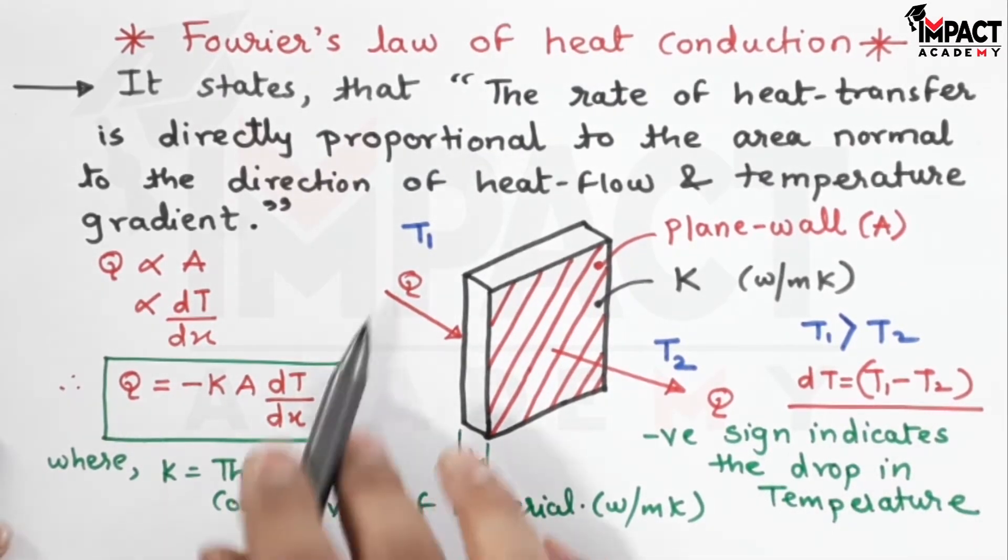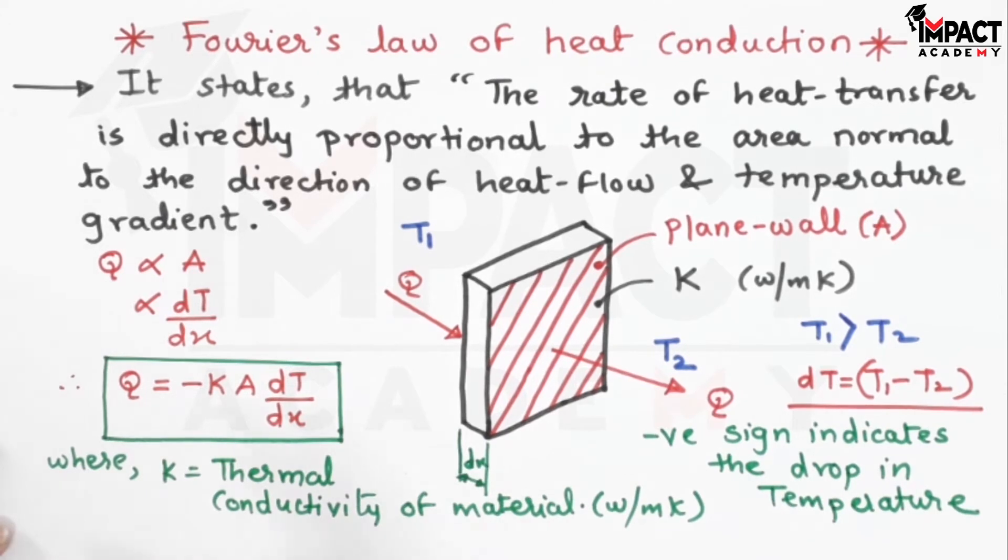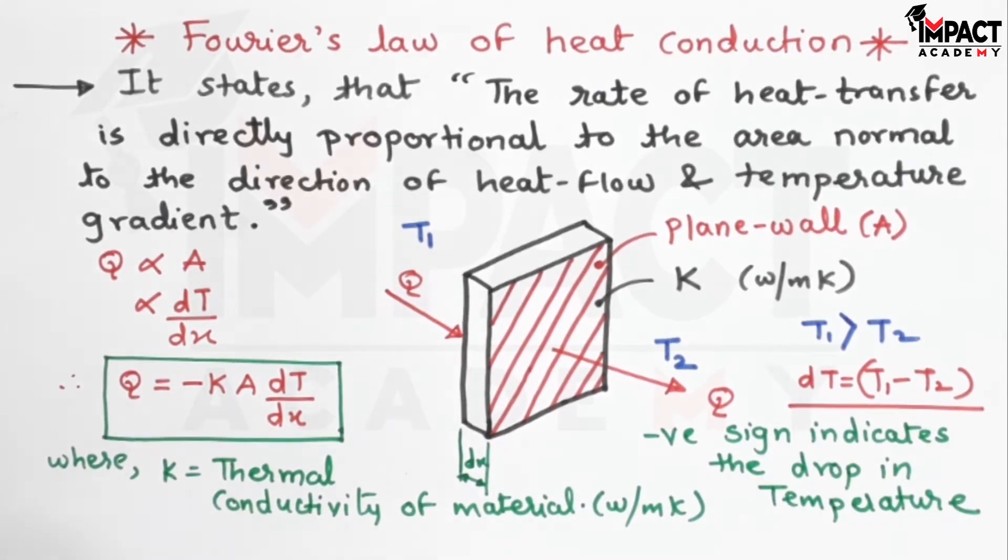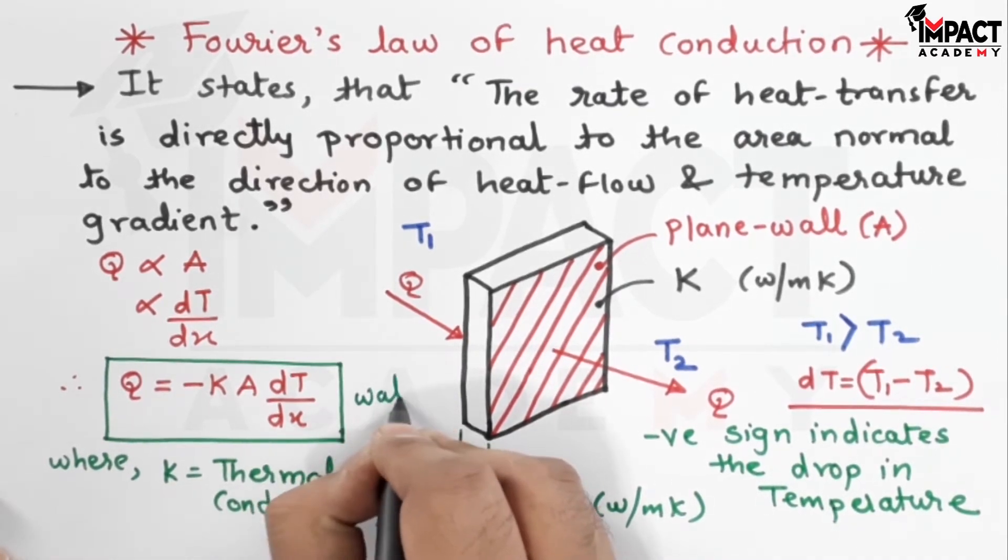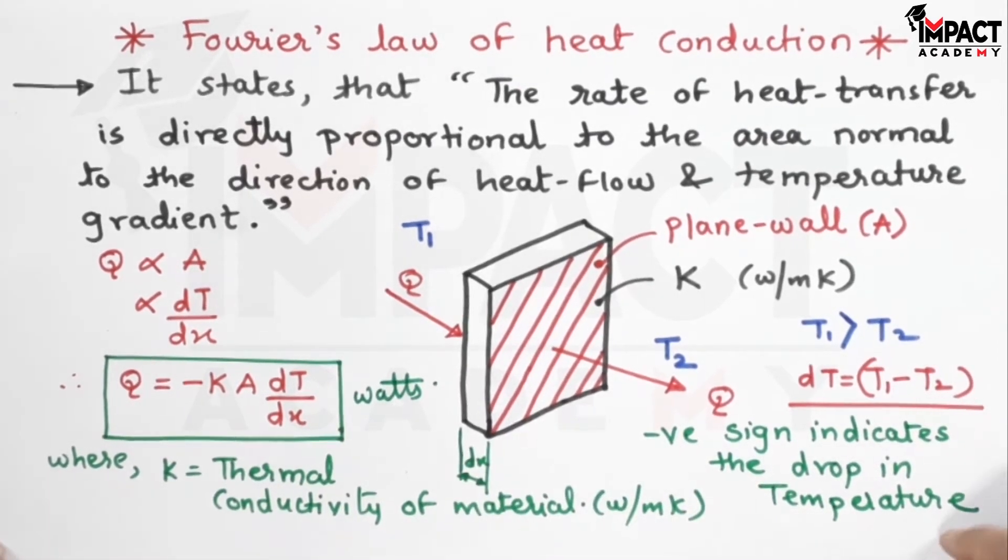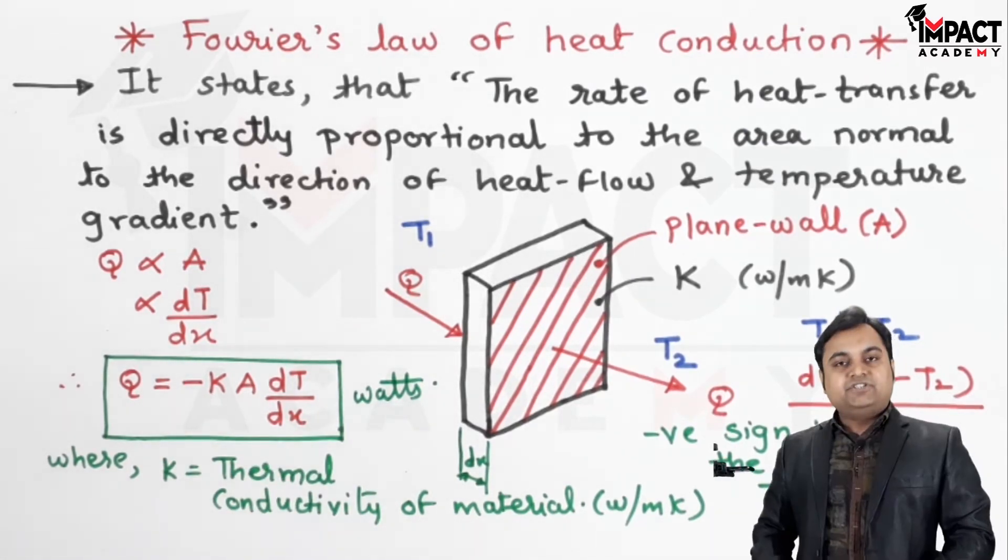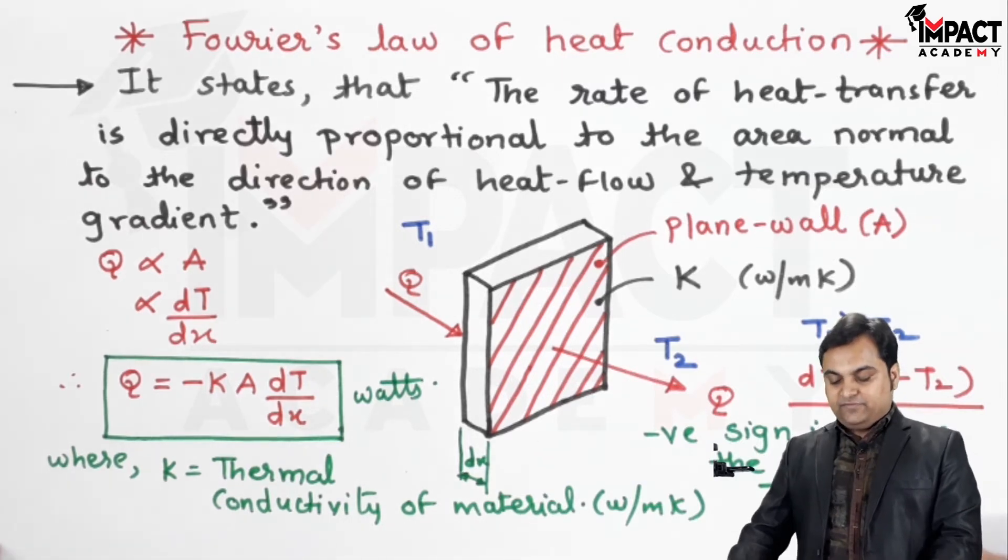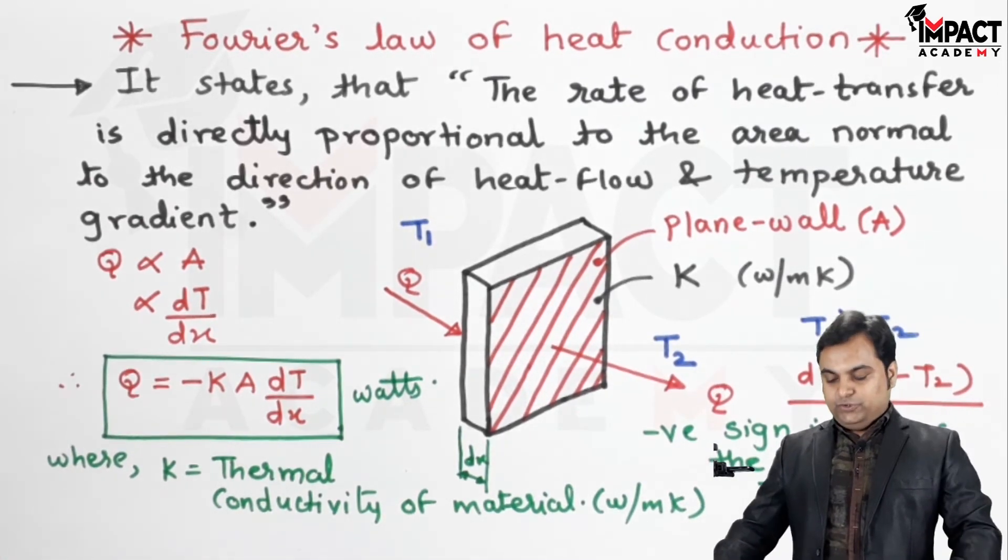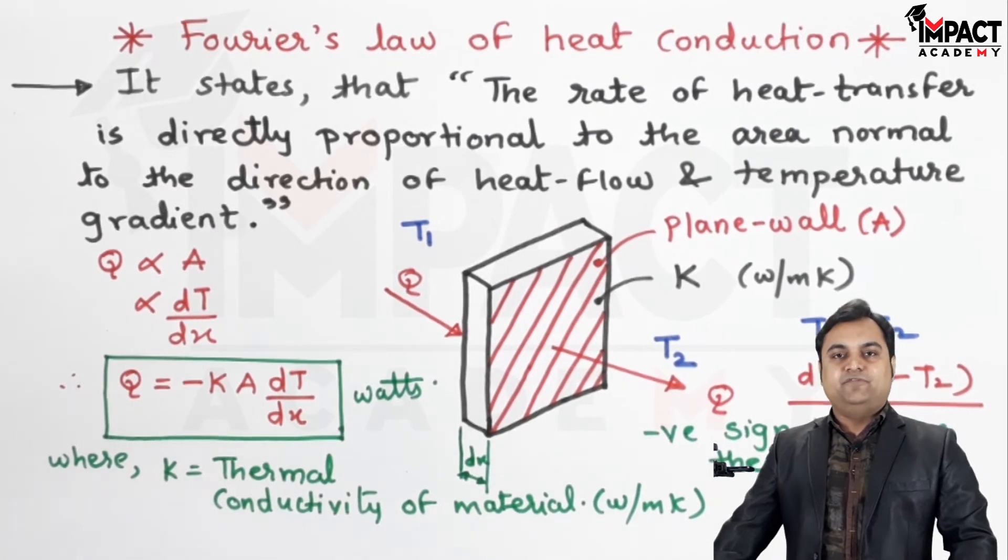That is, from T1 to T2, the temperature goes on continuously decreasing. Here the unit of heat transfer would be in terms of watts. This law is the governing law for heat conduction, and it would be used further in the analysis as well as in the problems for conduction. So in this video we have seen what is meant by Fourier's law of heat conduction.